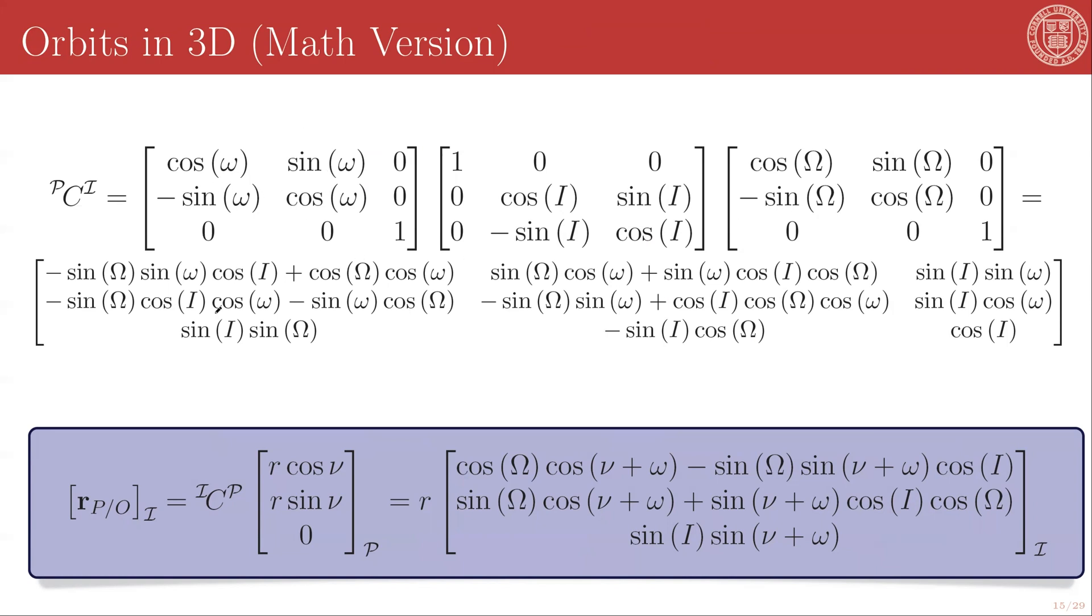If we multiply all of this out, we get the full direction cosine matrix PCI, which represents the transformation of a vector's components in the I-frame to that same vector's components in the P-frame. Typically, we want the inverse rotation, because we've already established the orbital radius and velocity components in the P-frame. So what we're really looking for is ICP, which is the inverse or transpose of PCI. And so if we take the transpose of this matrix and multiply it by our parafocal frame components of the orbital radius vector, using the polar coordinates r and nu, we will get the components of the orbital radius vector in our arbitrary I-frame, which is given by this expression.